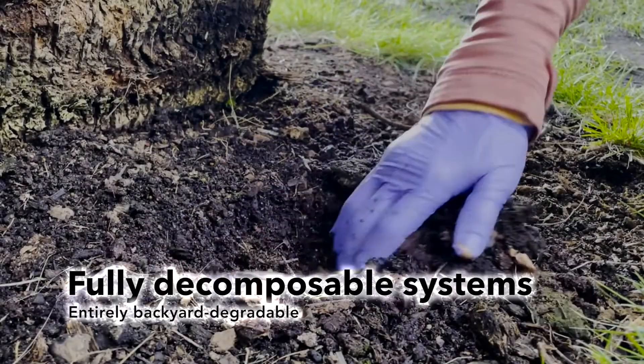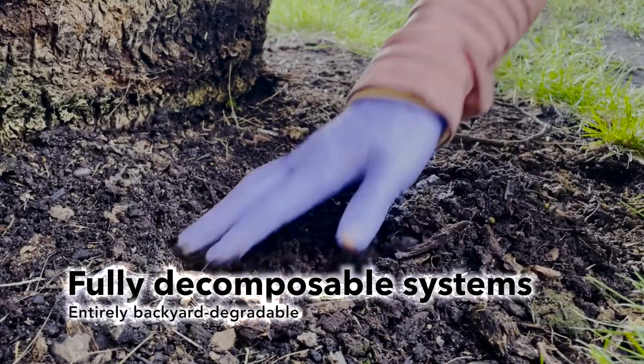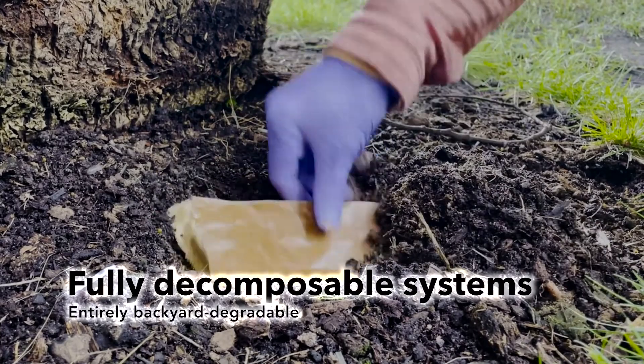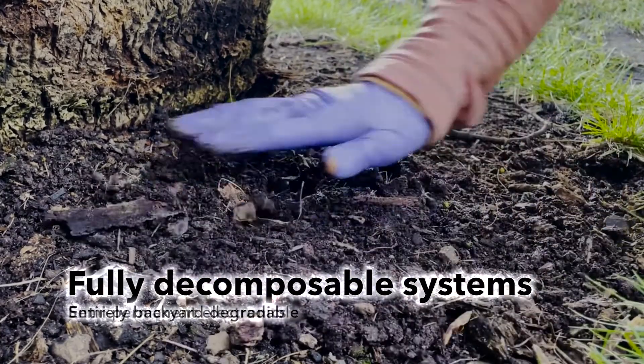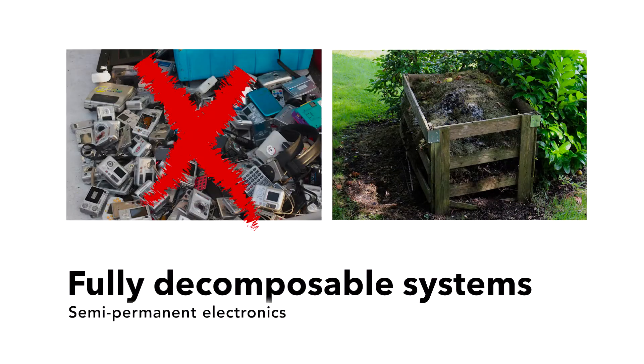We show that by bringing sustainable material selection even more to the forefront and prioritizing it very early in the design process, we can take this one step further and design fully decomposable systems that do not require complicated extraction at end of life. We think that this approach is especially relevant for semi-permanent electronic applications that demand both reusability and responsible disposability.